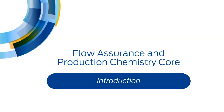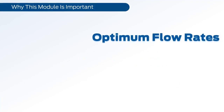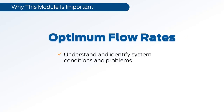This PetroSkills PetroAcademy skill module covers flow assurance and production chemistry at the core knowledge level. Impediments to achieving optimum flow rates in any oil and gas production system often may be resolved through the proper understanding and identification of system conditions and problems and the application of production chemistry principles. This is especially true in older fields that have developed unique problems over time.